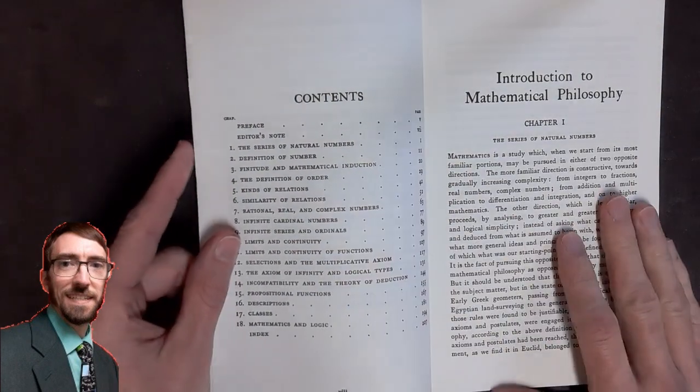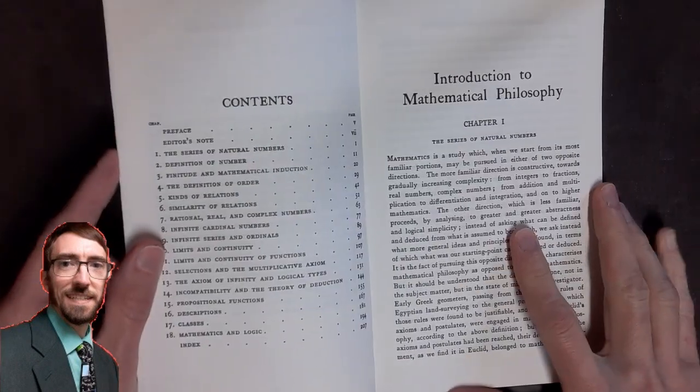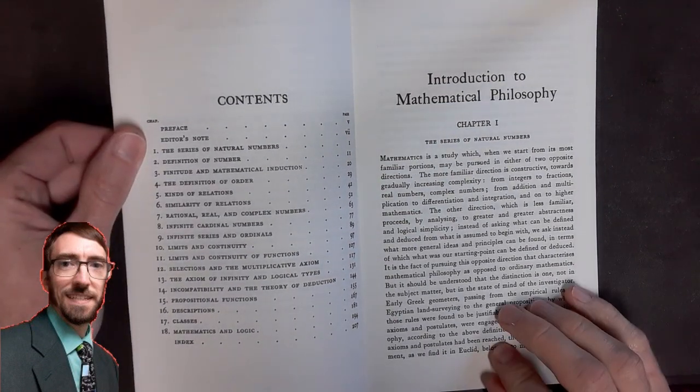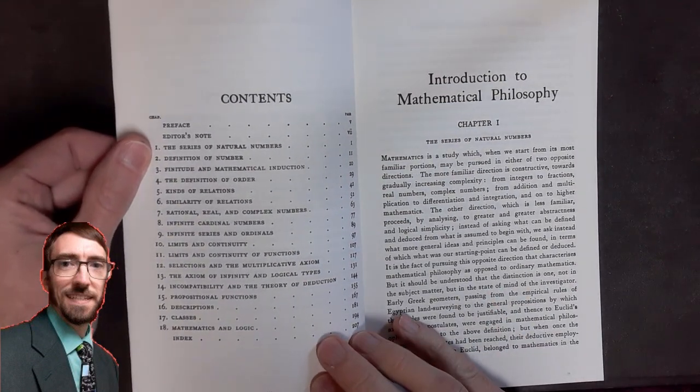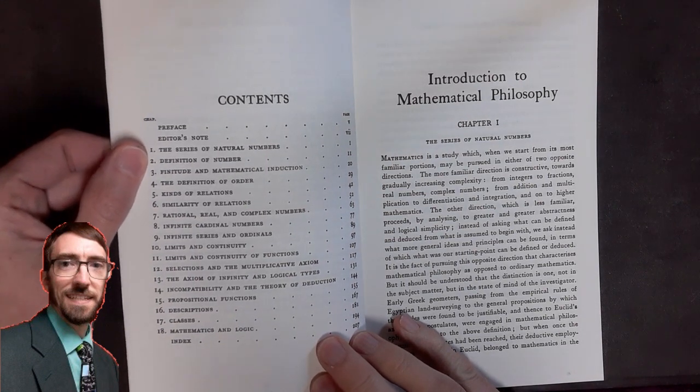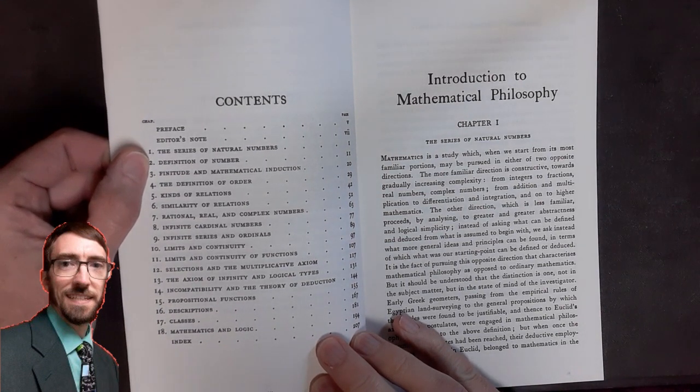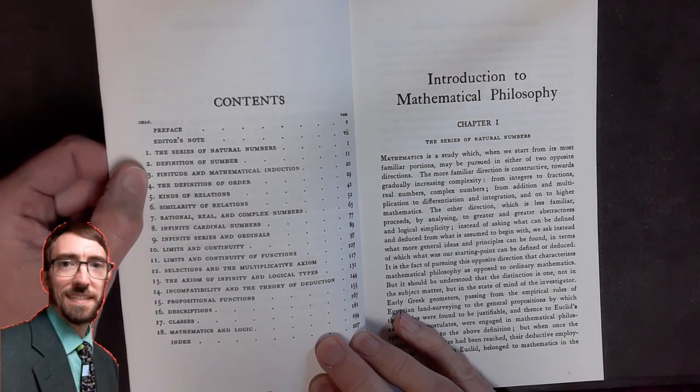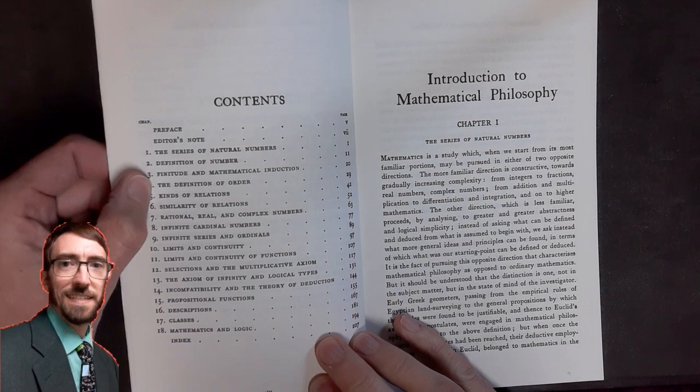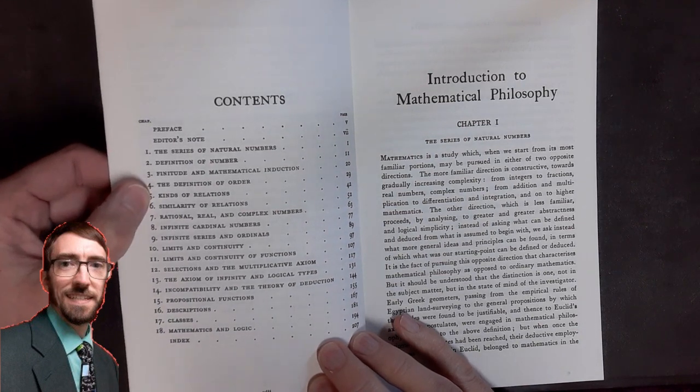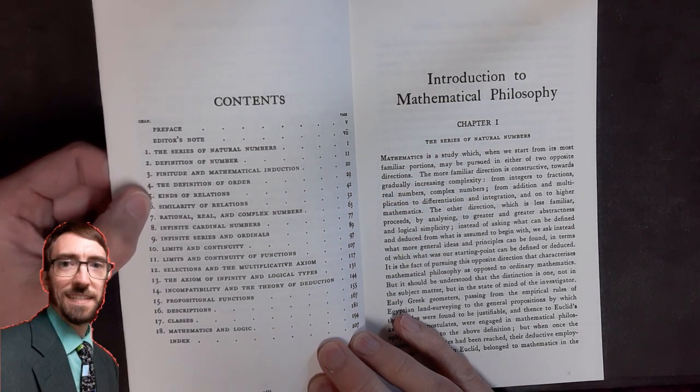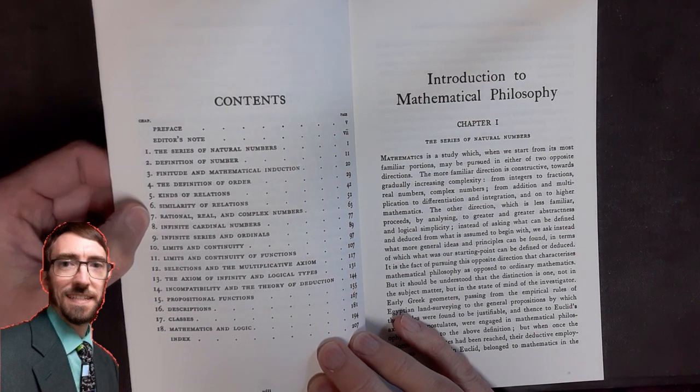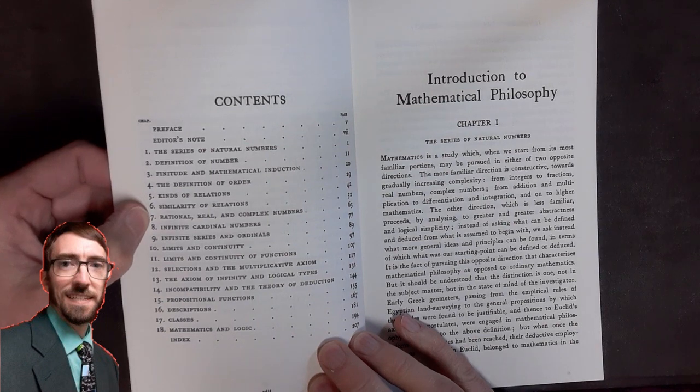And then we get to the contents. The contents list the chapters here. First chapter being the series of natural numbers. Chapter two is definition of number. Three is finitude and mathematical induction. Four is the definition of order. Five is kinds of relations. Six is similarity of relations. Seven is rational, real, and complex numbers.